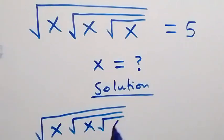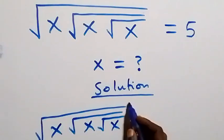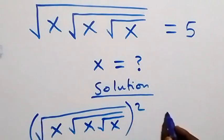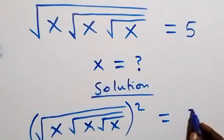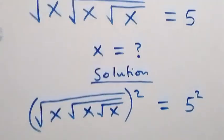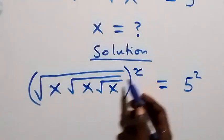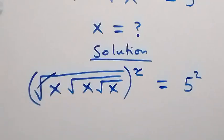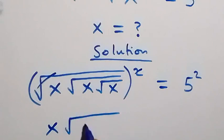Square root of x — here we have all squares — then equals to this side as well. We have five squared. From here, the square cancels the square roots, and this becomes x times square root of x.